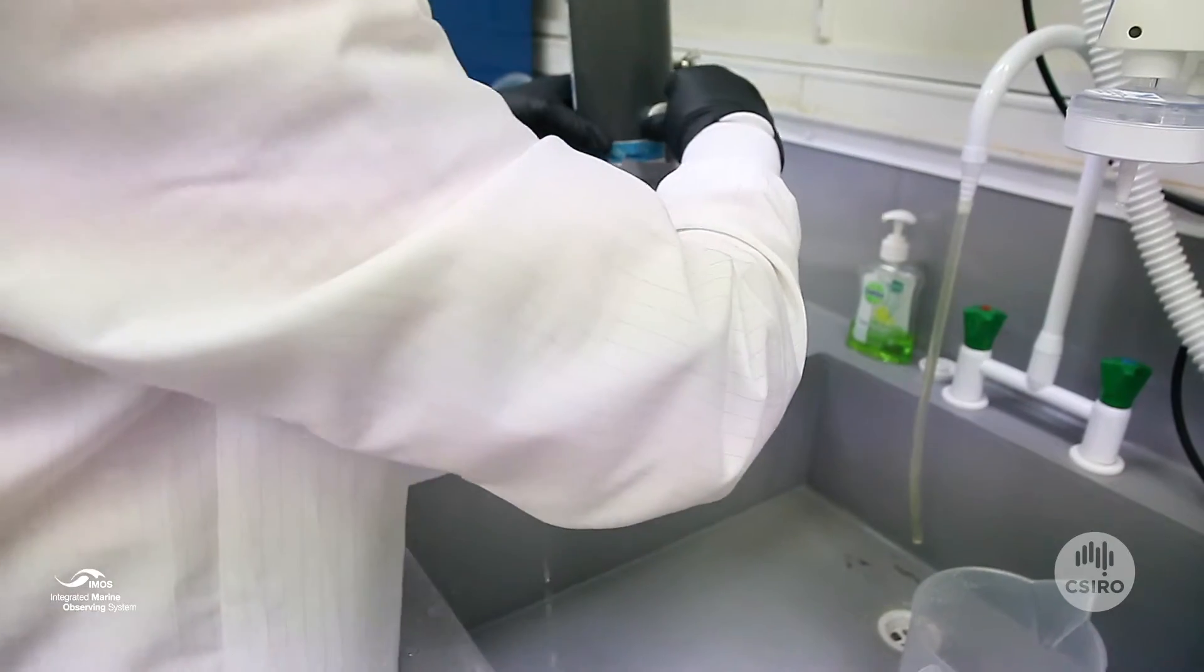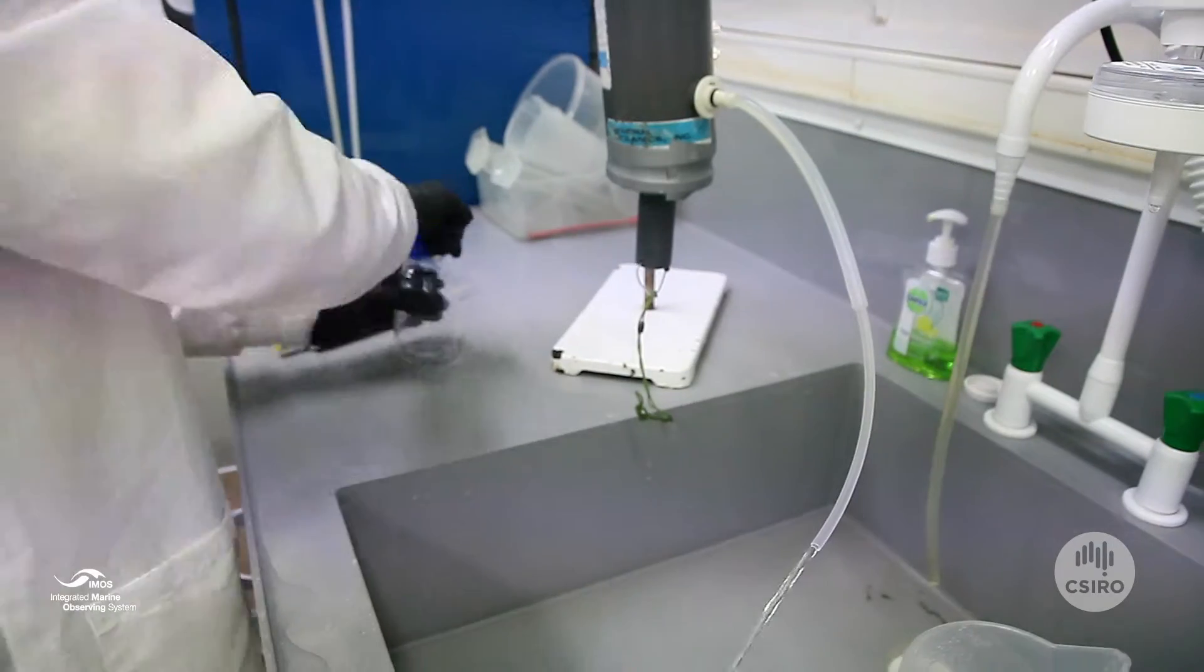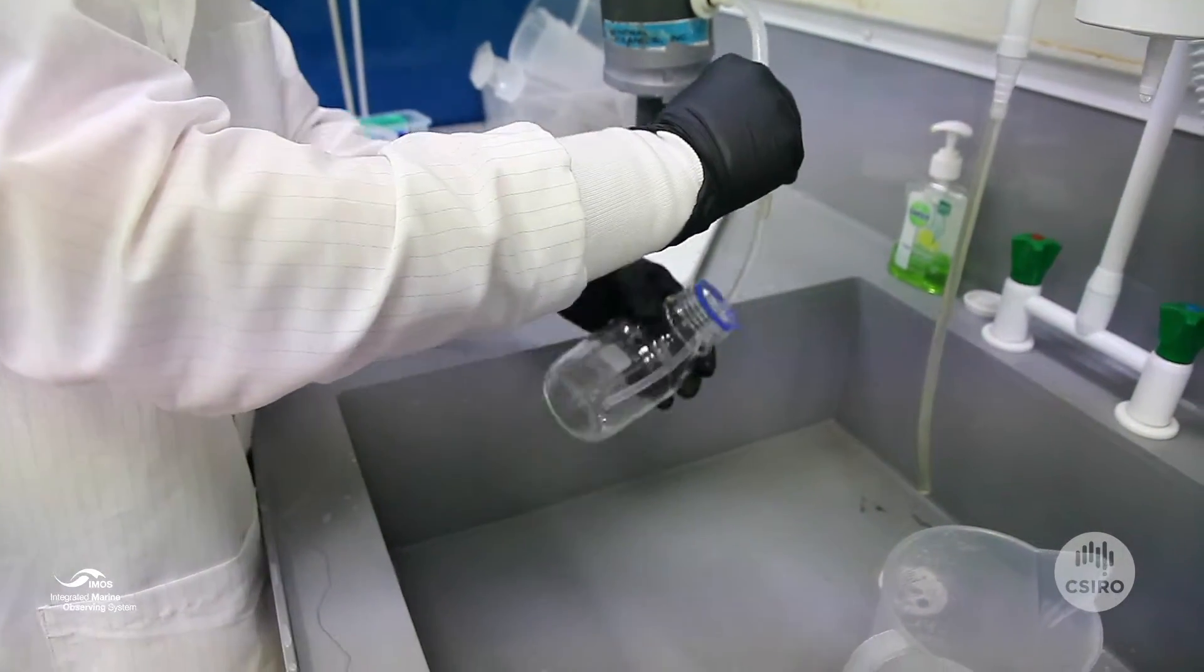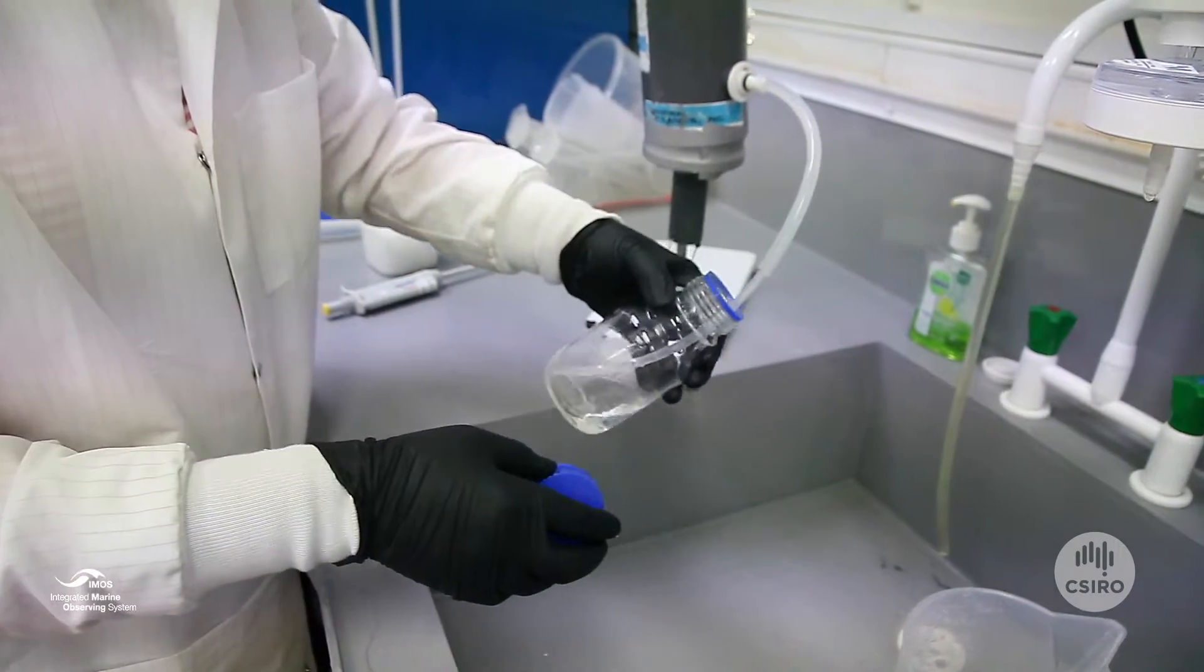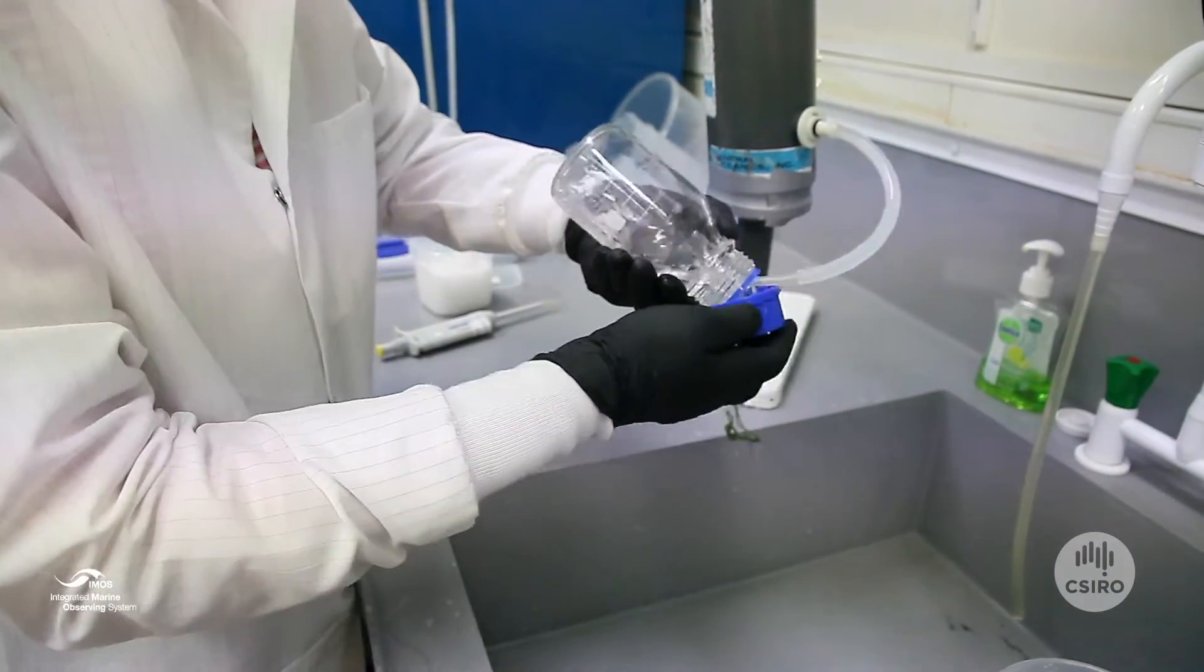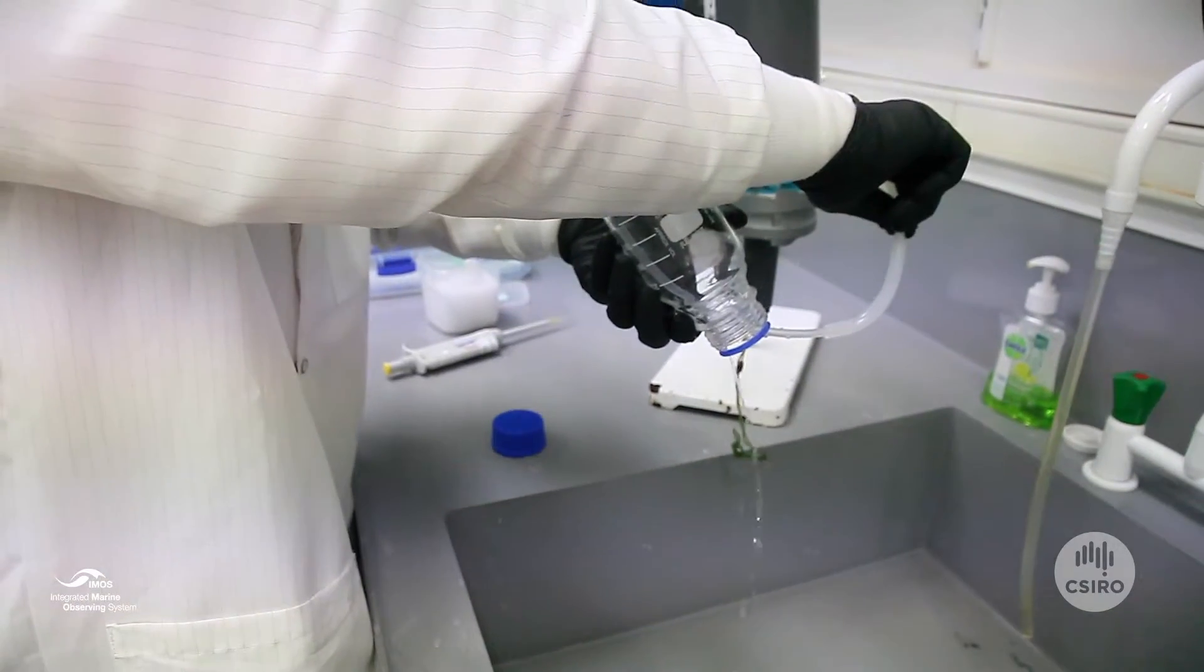The round bottles with the blue lids are for total alkalinity samples and they're taken in exactly the same way as the TCO2 samples. Start the flow. Rinse the bottle three times—once, twice, three times. Stop the flow.